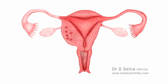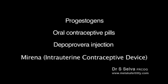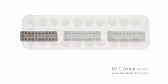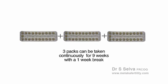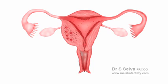Menstrual bleeding can be reduced with synthetic progesterone called progestogens, oral contraceptive pills taken continuously or cyclically, Depo-Provera injection, or Mirena. Oral contraceptive pills are usually taken for 3 weeks with a 1 week break to induce menstruation. However, 3 packs can be taken continuously for 9 weeks and then a break is taken for 1 week. In this way, the number of menstruations in a year can be reduced from 12 to 4, and so the number of episodes of pain can be reduced as well. Decreasing menstrual bleeding is believed to reduce the speed of growth of the adenomyosis.